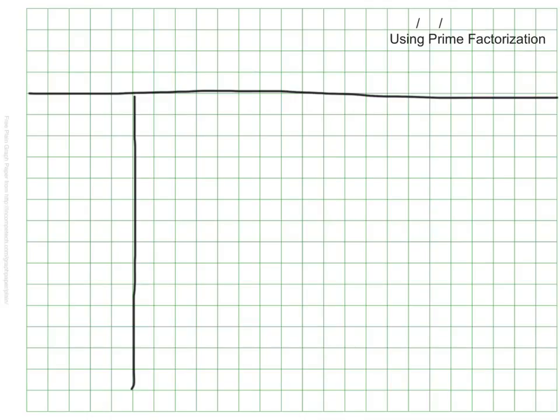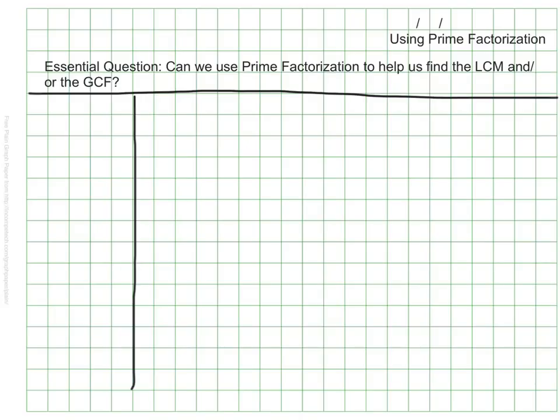This video is going to talk about how we can use prime factorization. We should have our page ready to go, make sure the date is at the top, and the topic is using prime factorization. Today's essential question is: can we use prime factorization to help us find the least common multiple and/or the greatest common factor? When we covered least common multiple and greatest common factor, some of you asked if there were more efficient ways to find these values. Well there is, and it has to do with prime factorization. So let's see if we can find out how it works.